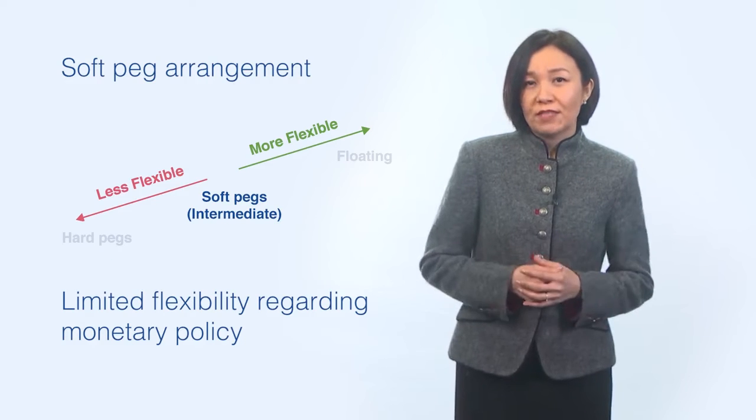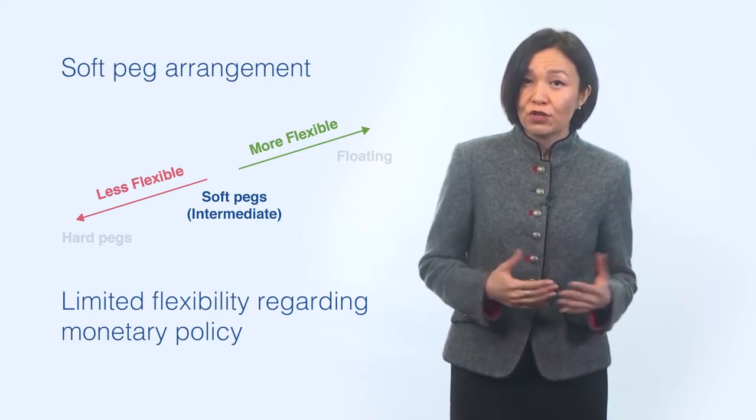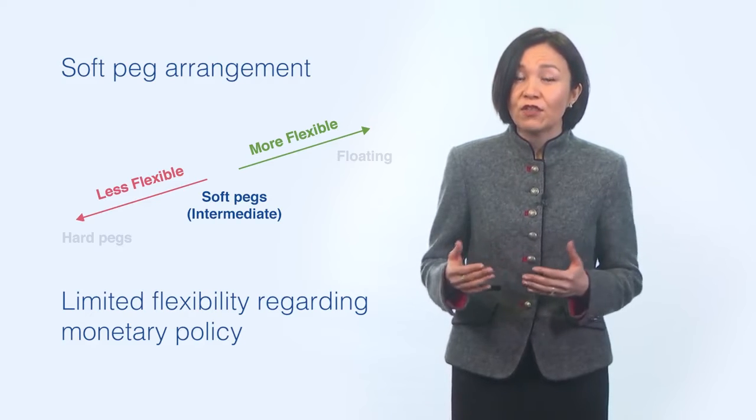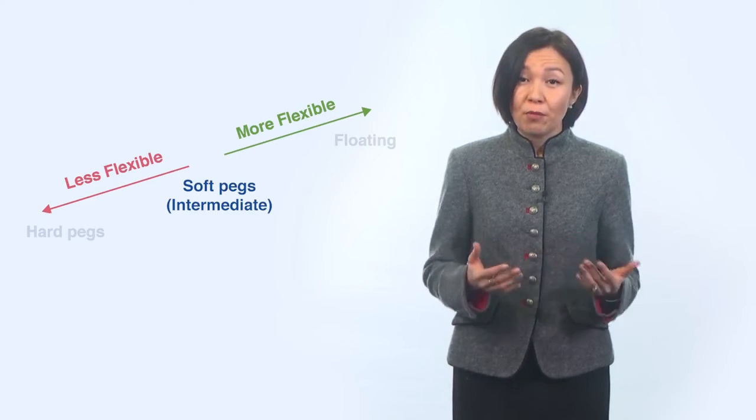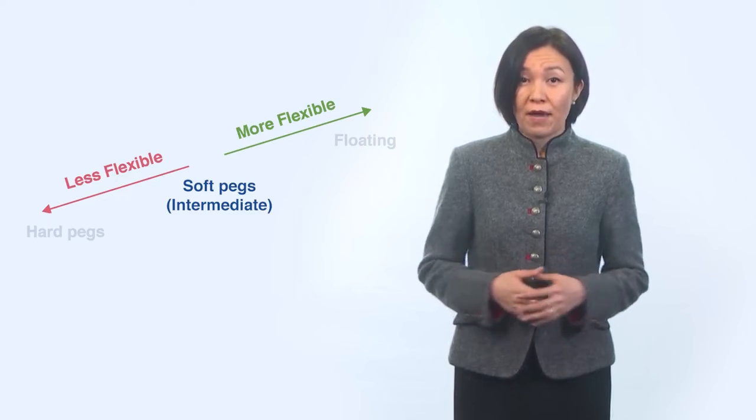For example, central banks can affect monetary conditions by adjusting the interest rate. This limited flexibility is, however, greater than in exchange arrangements with no separate legal tender and currency boards. The monetary authority can adjust the level of the exchange rate, although relatively infrequently.